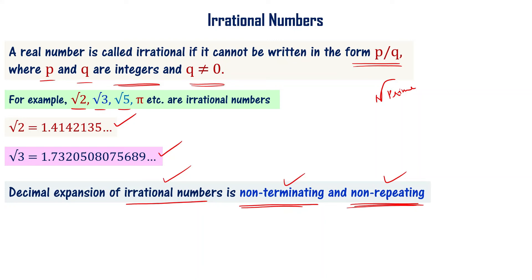This procedure is called proof by contradiction. To prove root 3 or root 2 is an irrational number, we first assume the given number is a rational number. If it is rational, we can write it as ratio of two integers — say a by b or p by q. We then assume this and through simplifications and mathematical modifications, we finally prove that whatever assumption we made is wrong.